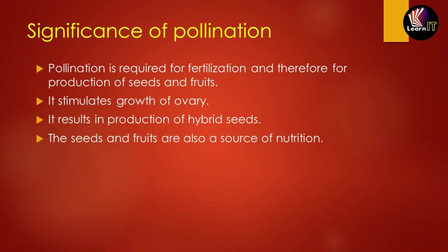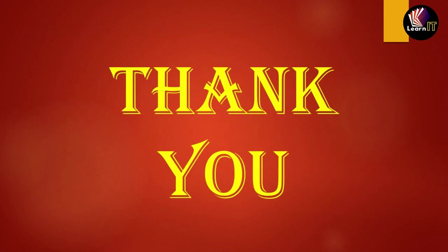There are many more types of pollinating agents such as bats and snails, but those were the important ones. Now let us move to the last topic: the significance of pollination. Pollination is important for the process of fertilization and therefore the production of seeds and fruits. It also helps in the growth of the ovary and results in the production of hybrid and different kinds of seeds. Seeds and fruits are also a source of nutrition.